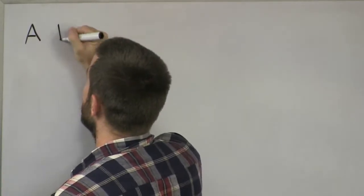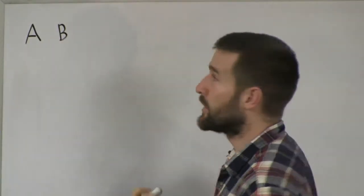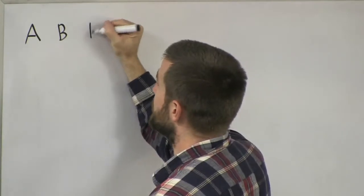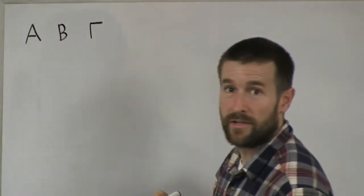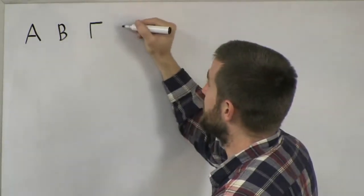So Alpha, and then the next one is Vita. And Vita, again, should look pretty familiar to you. The next one is Gamma. We've already learned that one.